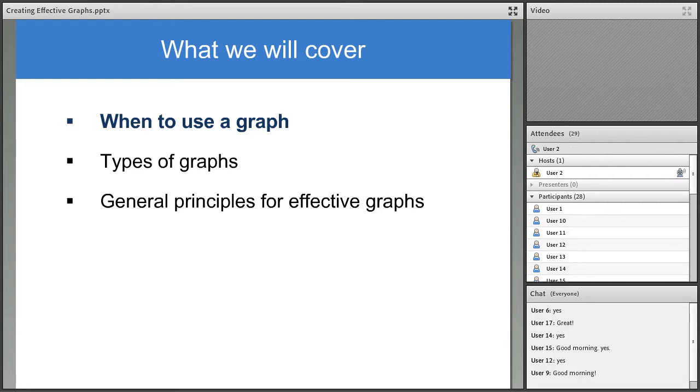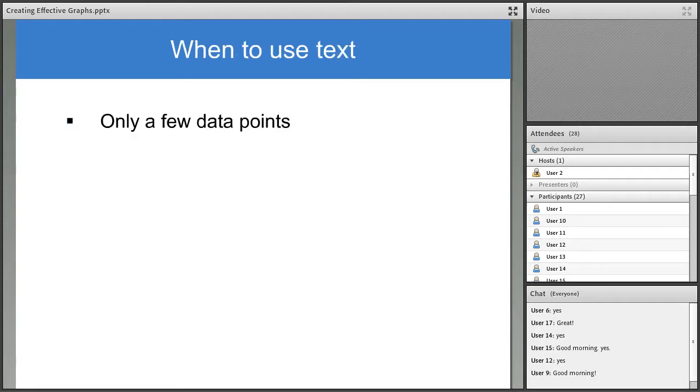So first let's talk about when to use a graph versus when to use text or a table instead. We want to pick the format that presents the data most clearly and concisely. Here are reasons you would want to use just text instead of a graph. You probably don't need a graph if you have only a few data points. In that case, the data can probably be presented clearly and concisely in a sentence or two. Or, if there's nothing to see because there was no variation, the visual image is not interesting or illuminating, then just use text.